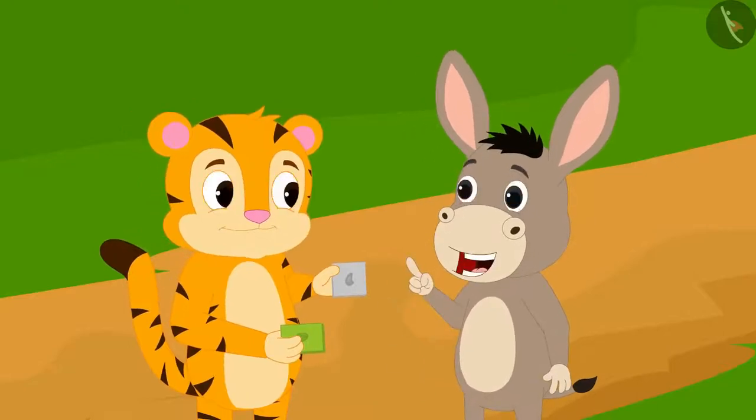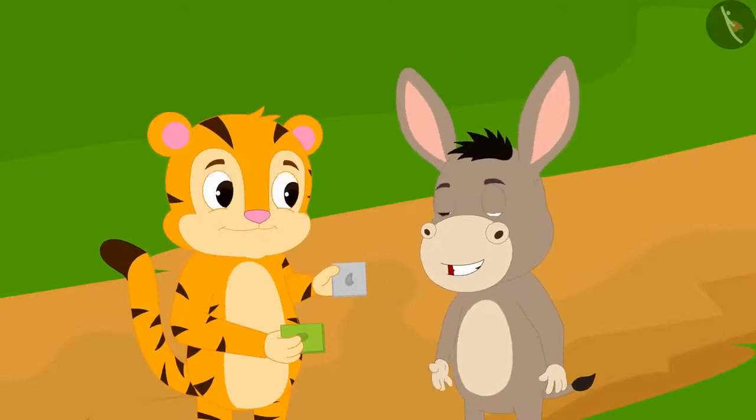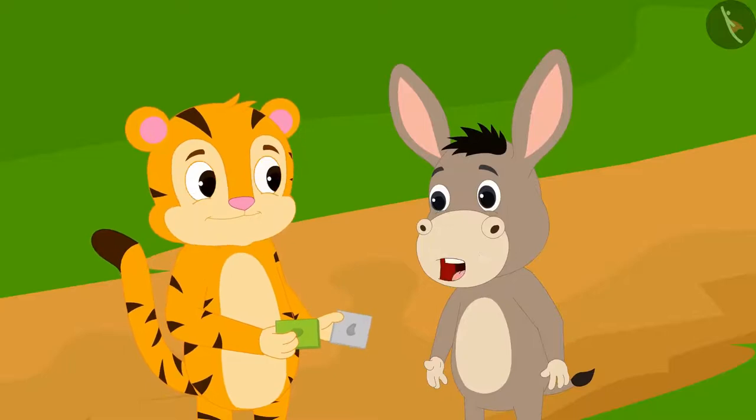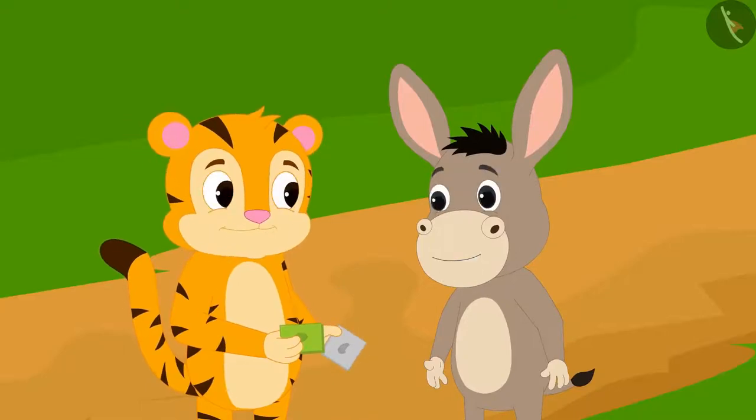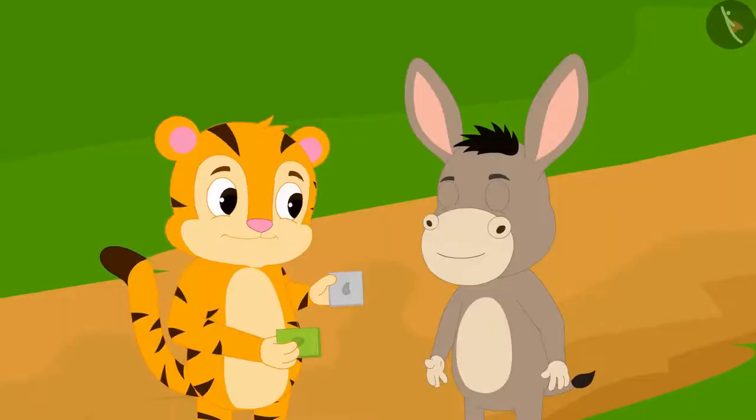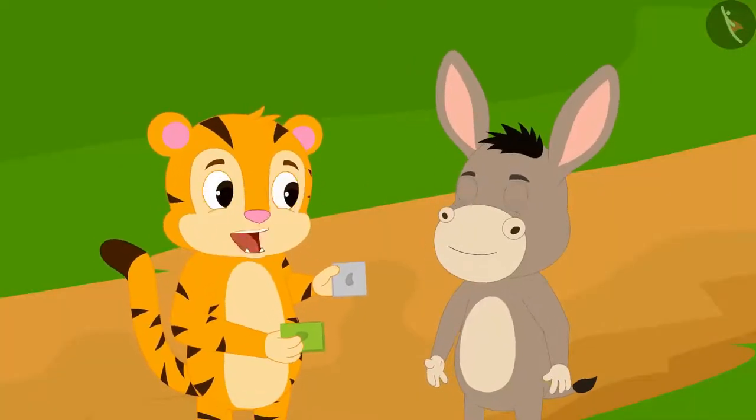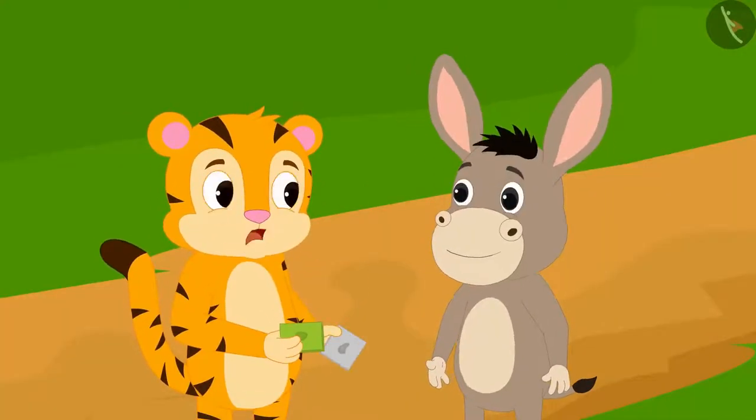Sher Khan, let us divide this cashew barfi and eat it in two equal portions. Bholla said to Sher Khan. Okay, but I have a condition. We will play a game.